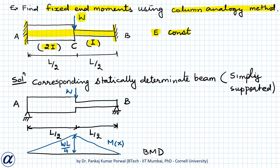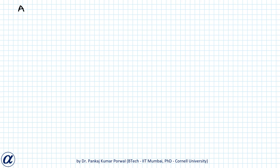The next step is to draw the analogous column. The analogous column will be a short column with width equal to the length of the beam, L, and breadth equal to 1/(EI). For the first half, since the second moment of area is 2I, the breadth will be 1/(2EI). For the second half, since the second moment of area is I, the breadth will be 1/(EI).